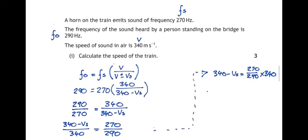Now, I've got 340 minus VS on the left hand side. I just want VS on the left hand side on its own. So I need to get that 340 that I'm adding on the left hand side over to the other side. So I'm going to subtract it on the other side. And that leaves me with minus VS equals 270 over 290 times 340 minus 340. I put these numbers through my calculator and eventually I get an answer of 23 meters per second.